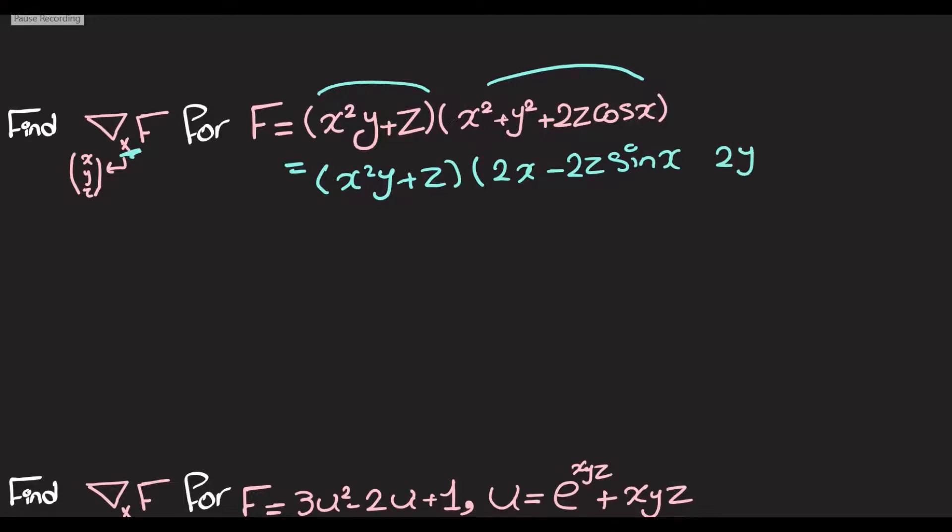Then with respect to z, it's going to be 2cos(x). So I basically differentiated this once with respect to x, then y, then z. Okay, so this was left as a constant and we derived this. Then we'll do the opposite, so we're going to leave this one as a constant, plus 2z cos(x), and differentiate this one.